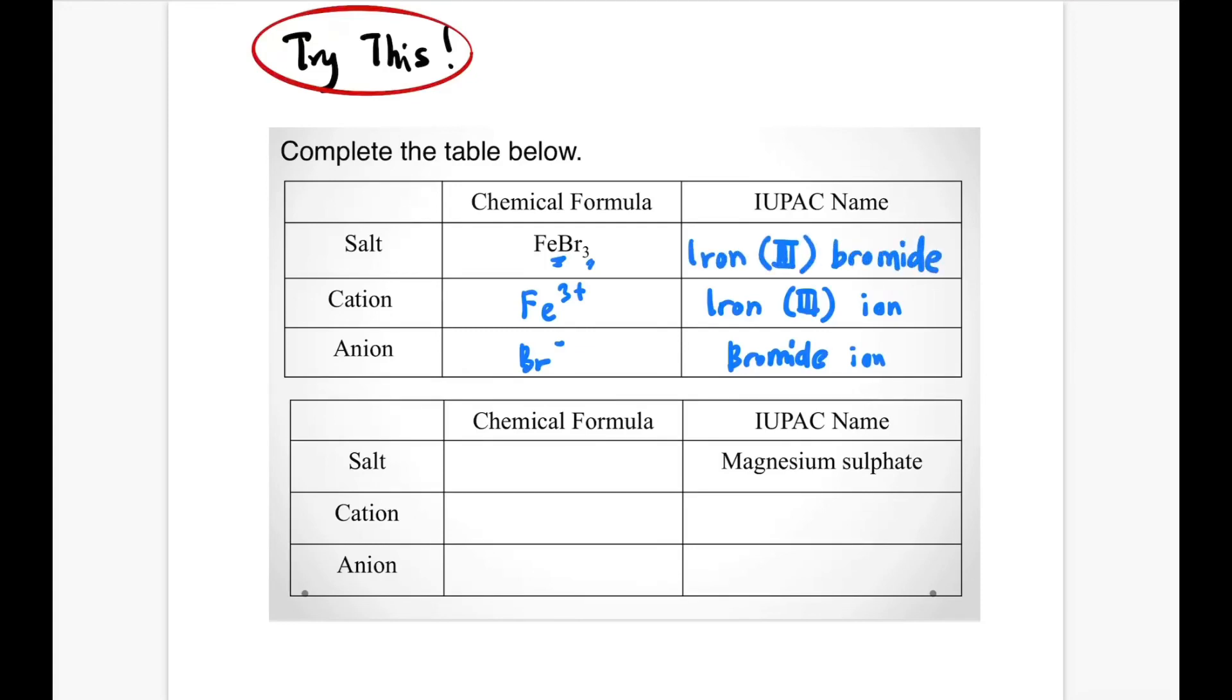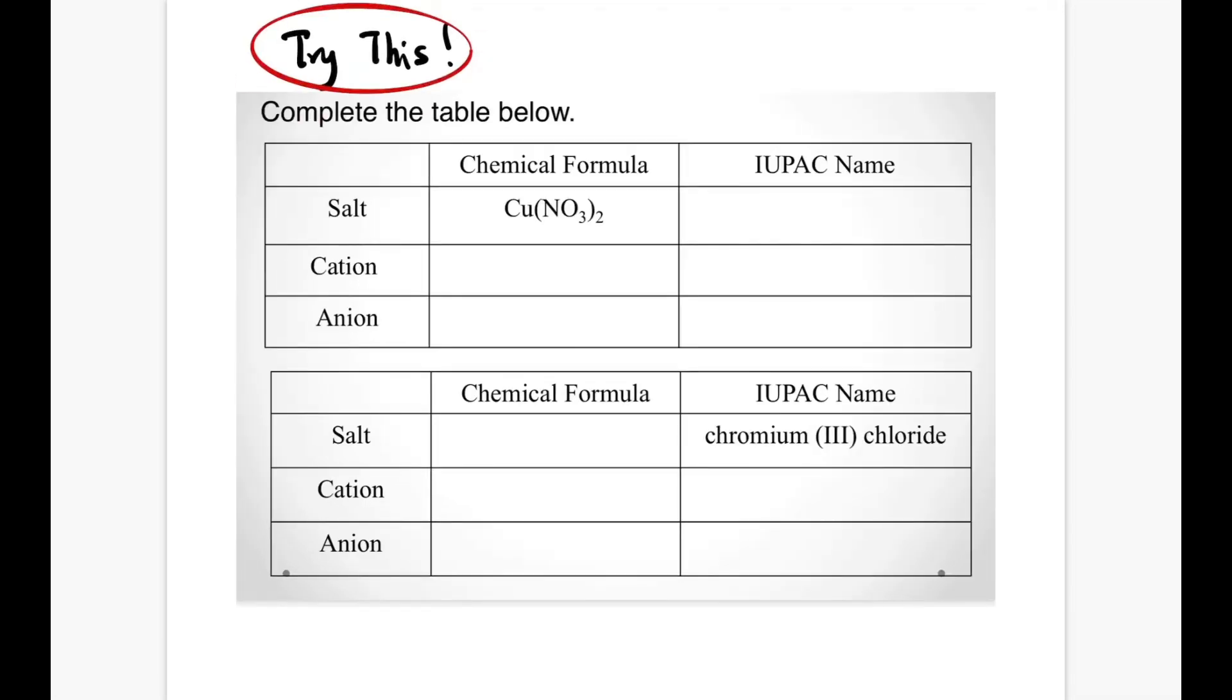The name for the anion is bromide ion, the cation is iron(III) ion, and the name of the formula is iron(III) bromide. For magnesium sulfate, the salt is MgSO4. The cation is Mg2+ magnesium ion, and the anion is SO4²- sulfate ion.